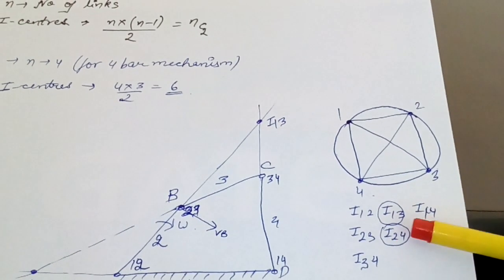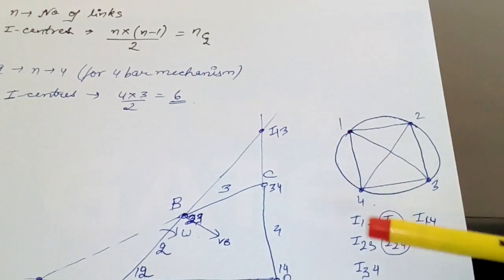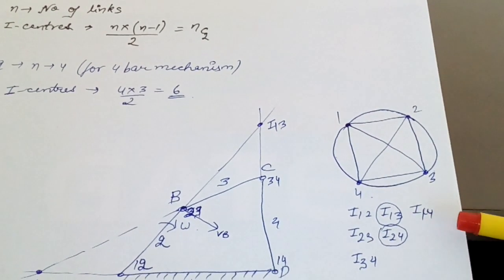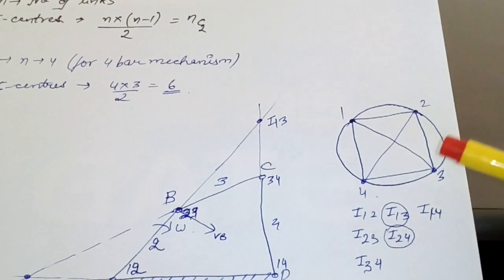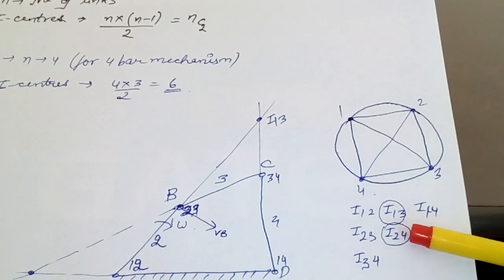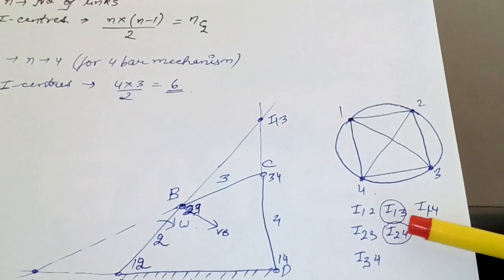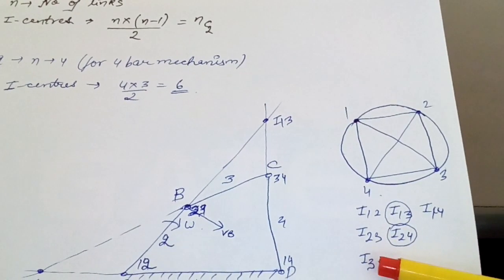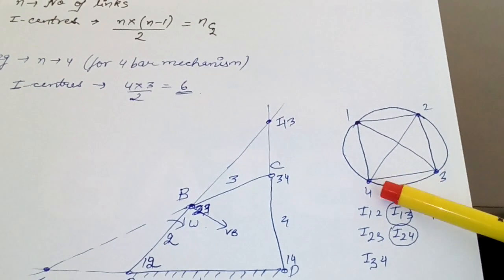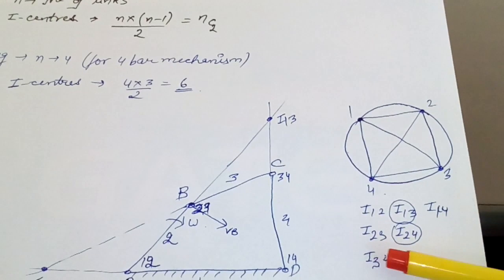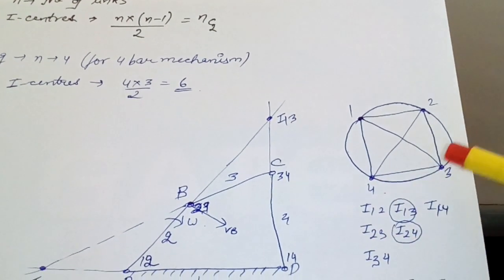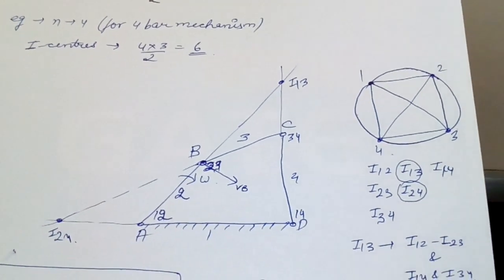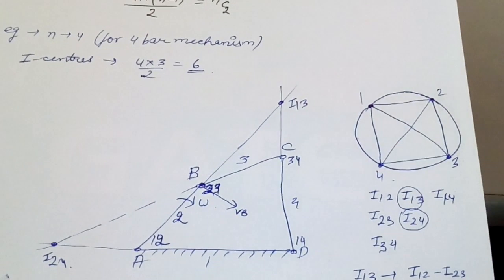Continuing: after I24, the last number 4 is reached, so we jump to 3. After 3, only 4 remains, giving us I34. That completes all 6 I-centers: I12, I13, I14, I23, I24, and I34. This is the systematic trick to list all I-centers.